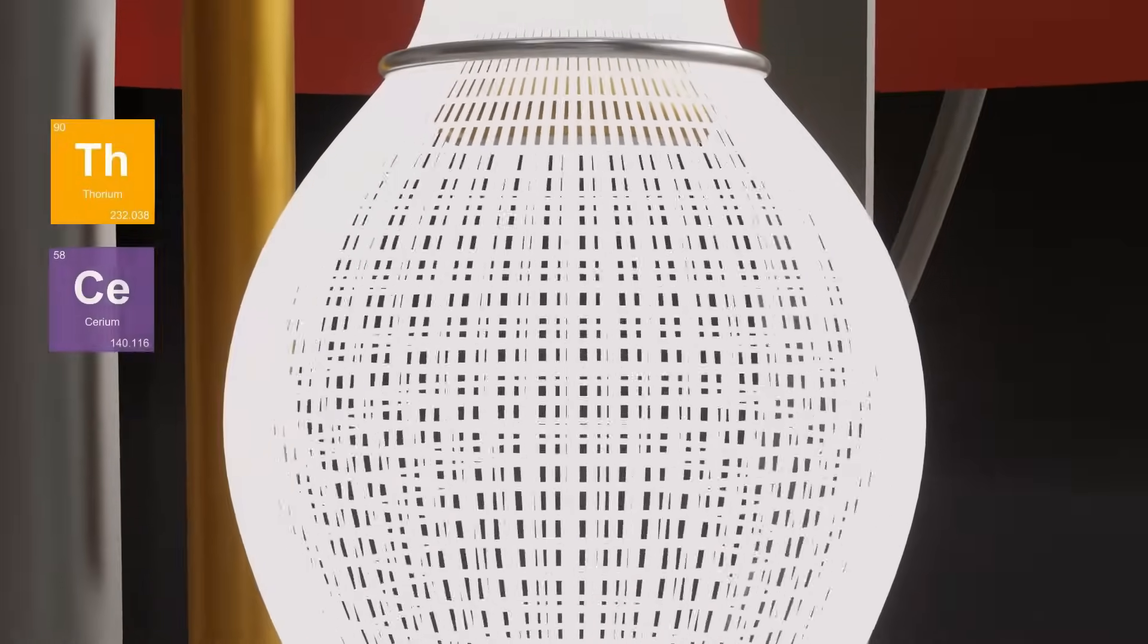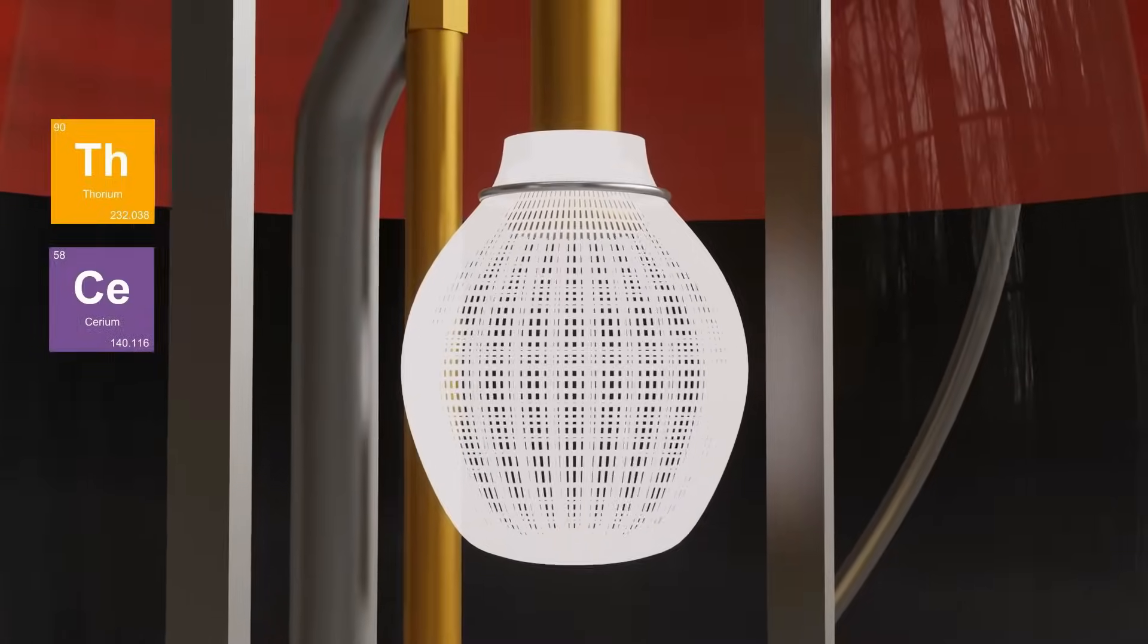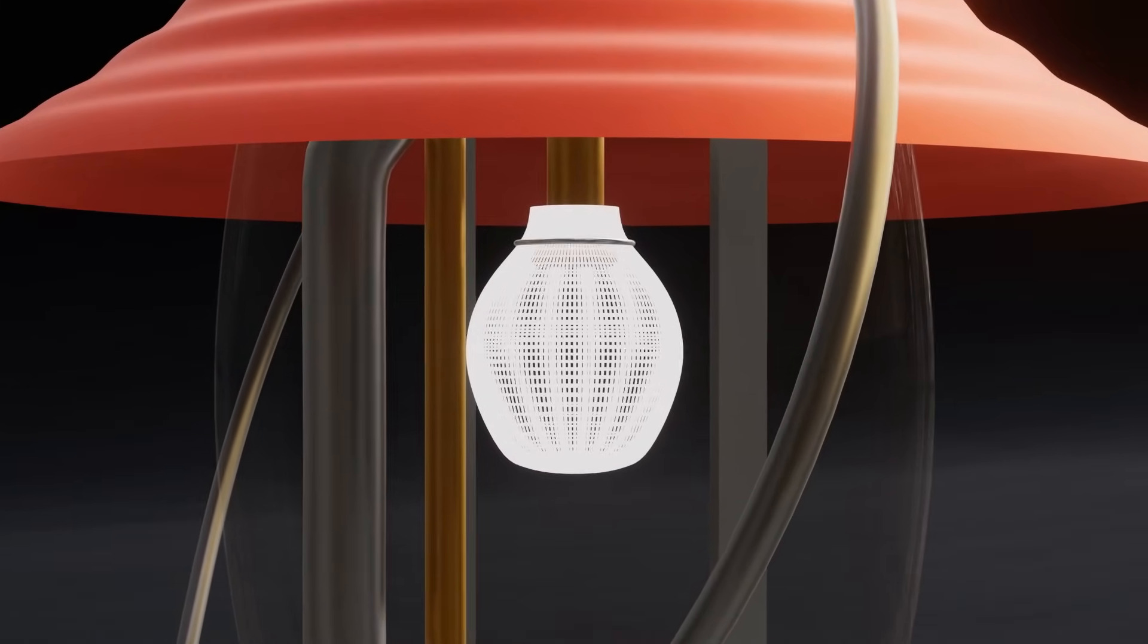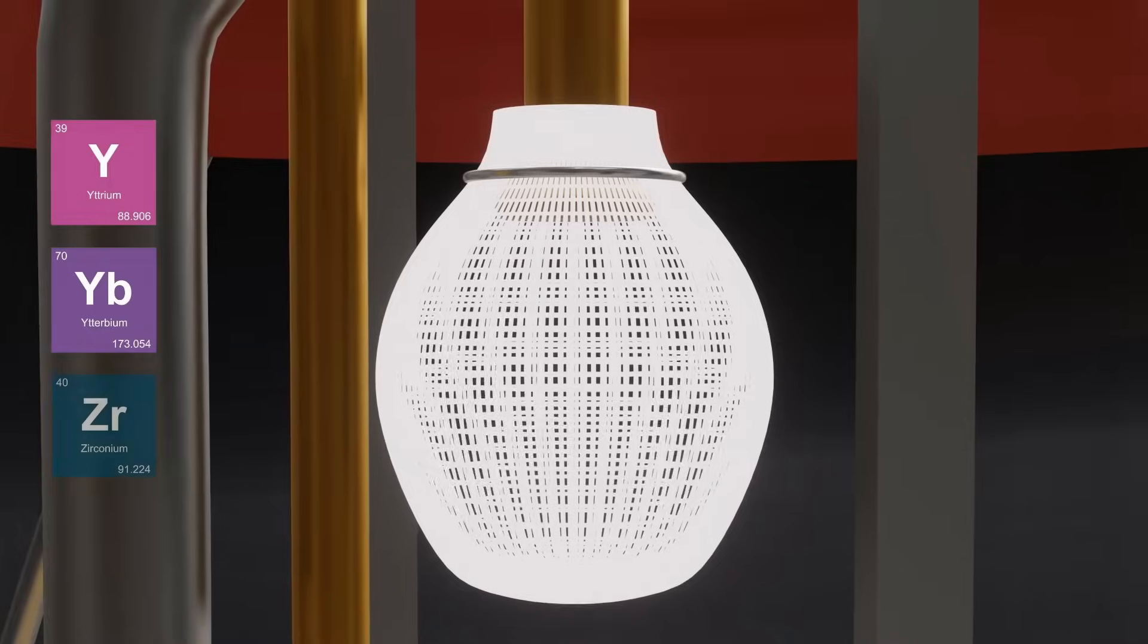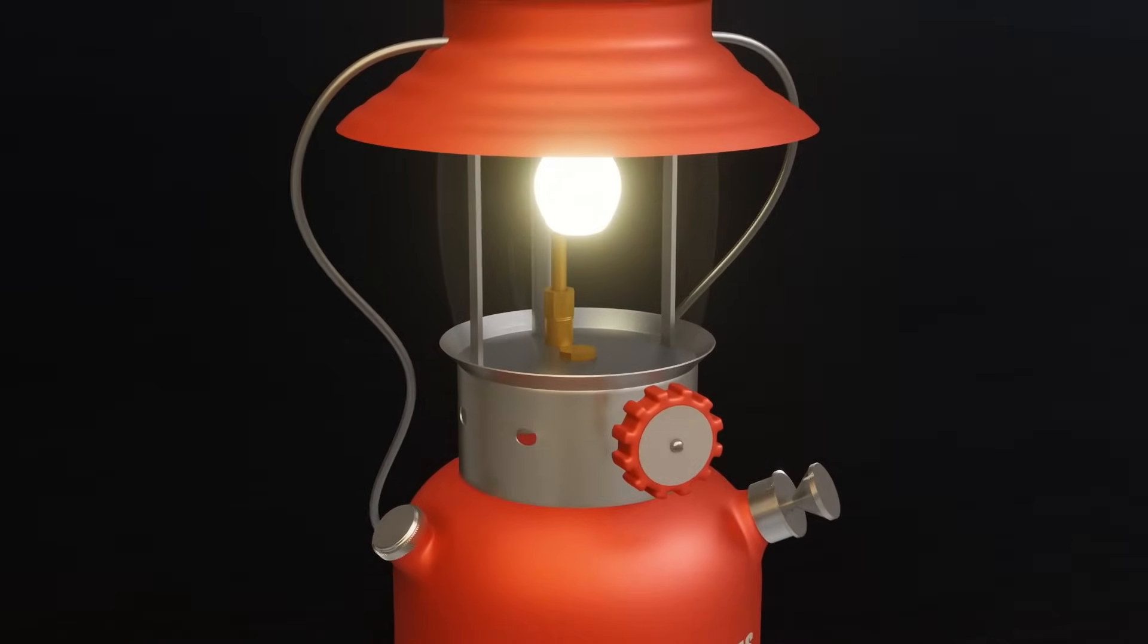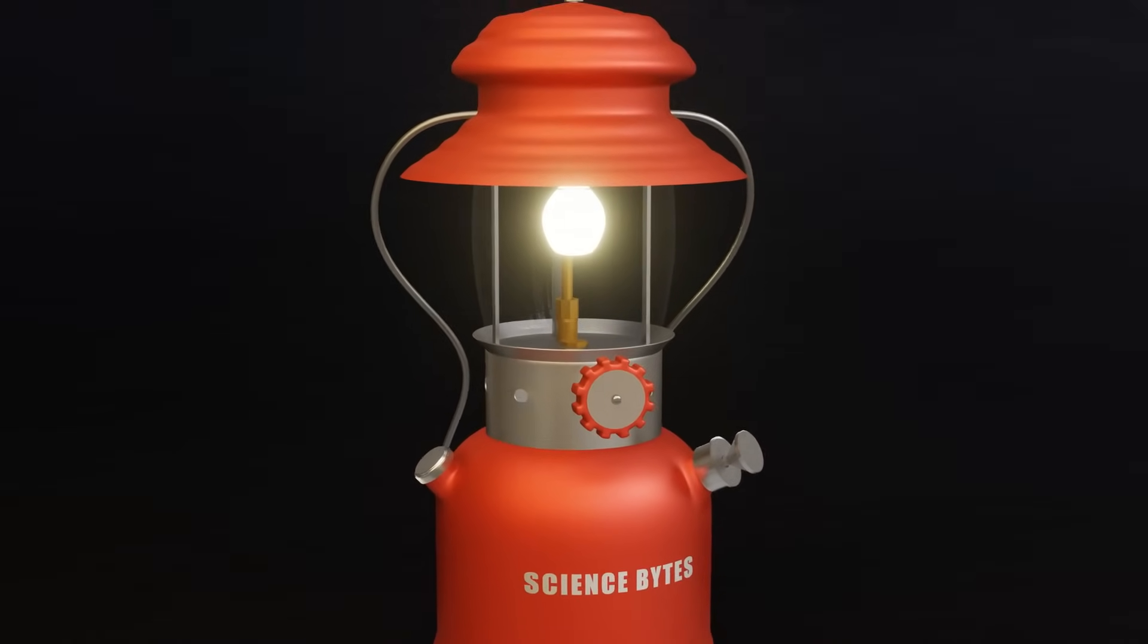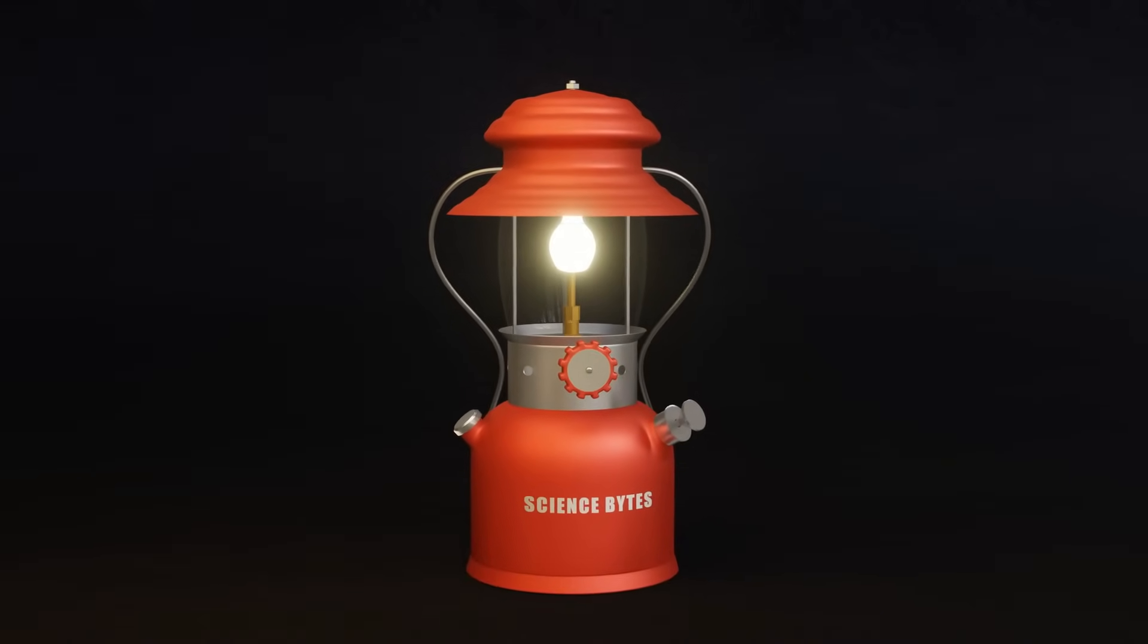In the past, mantles were treated with thorium and cerium nitrates, with thorium, a radioactive metal known for its high melting point, providing the incandescence. However, modern mantles are non-radioactive and are impregnated with a solution of yttrium, erbium, and zirconium, providing the same glowing effect without the risks of radioactivity. With just a full tank of 0.2 gallons or 0.75 liters, the lantern burns for an impressive 9 to 10 hours, filling the darkness with a steady, unwavering brilliance.